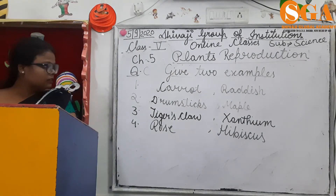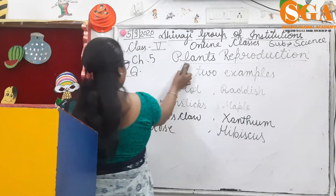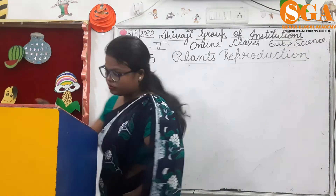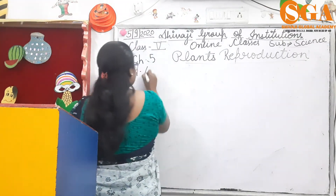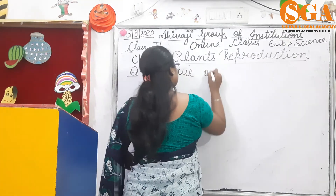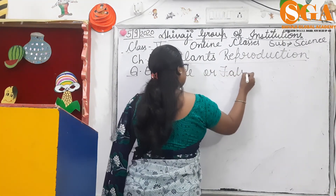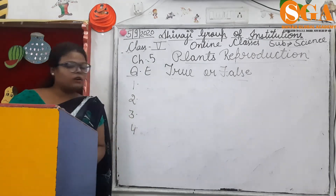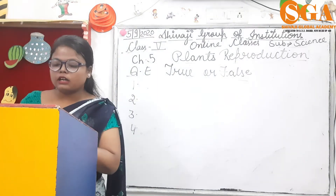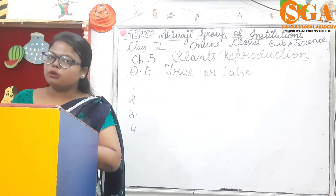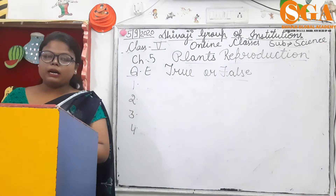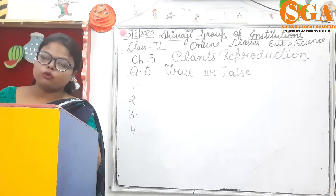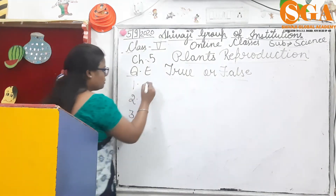Exercise E: state T for true and F for false. Question one: potatoes grow underground and new plants can be grown from its root. Kids, potatoes are underground plants but new plants cannot grow from roots — they grow from their buds. So this statement is false.